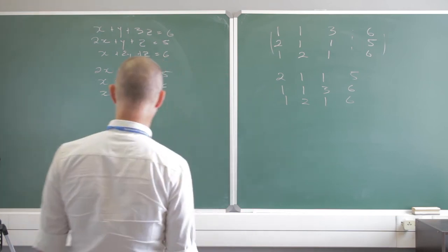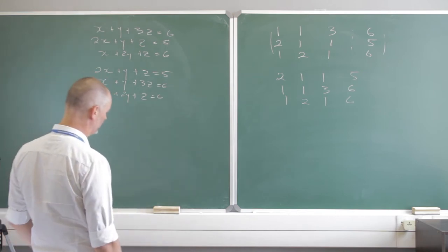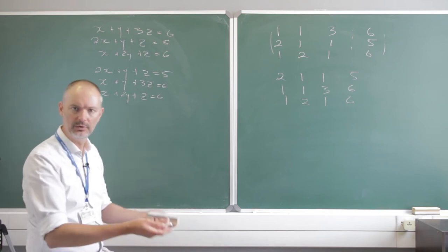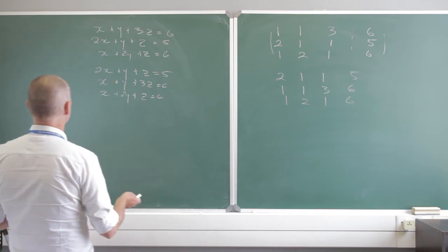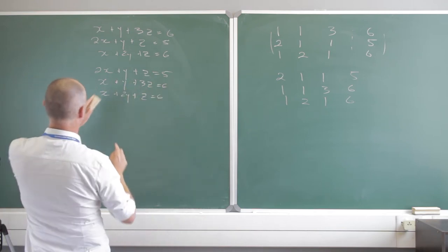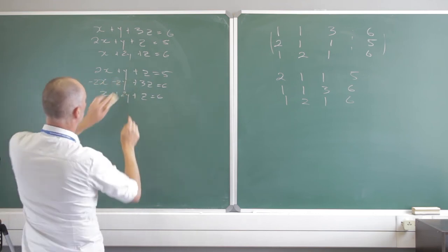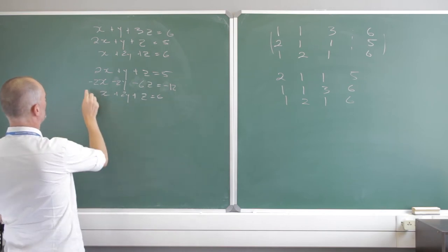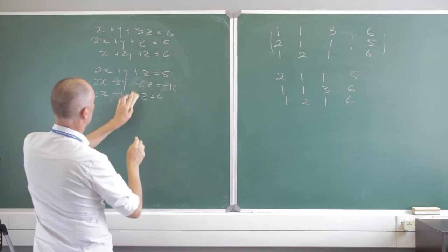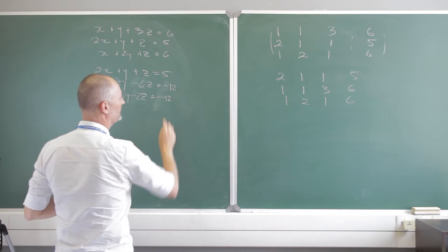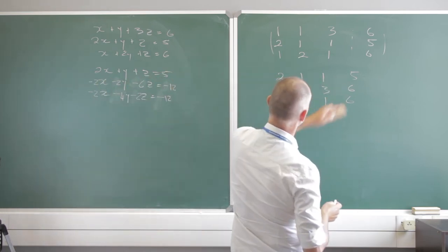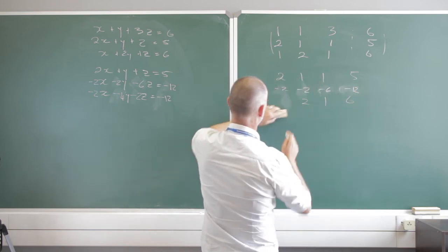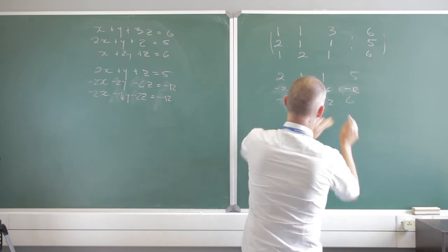Now I notice I can do something here. My idea is to get rid of the x and get rid of the y, so I'm just left with a z and then work backwards. If I multiply the second row throughout by negative 2, I get negative 2x, negative 2y, negative 6z, and negative 12. And I can do the same thing with the third row — multiply by negative 2 — to get negative 2x, negative 4y, negative 2z, and negative 12. So in the matrix, the first row stays the same: 2, 1, 1, 5. The second becomes negative 2, negative 2, negative 6, negative 12. And the third becomes negative 2, negative 4, negative 2, negative 12.